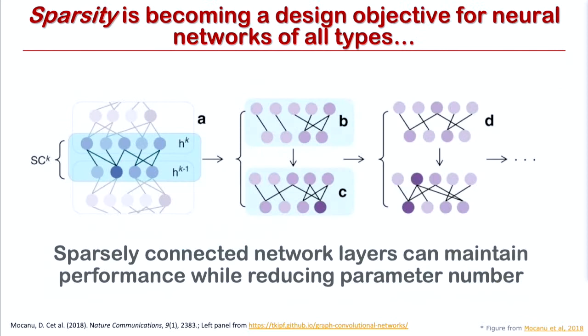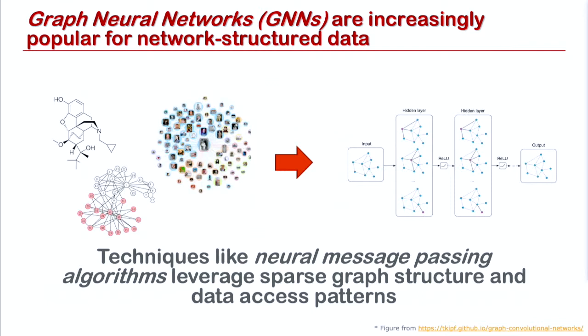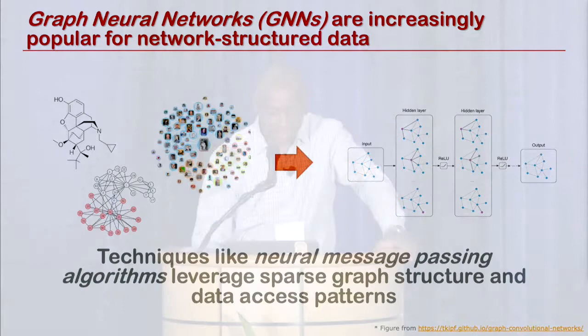Another implication is how neural networks are changing. Neural networks traditionally have been dense structures trained using dense matrix multiply operations, but more and more networks are becoming sparse, and people are thinking about training them fundamentally from a sparse starting point. This allows the number of parameters to grow without increasing quadratically. Another reason for sparsity is fundamentally modeling the world — where you want to model people, places, and things in their relationships, you have a sparse graph-like representation, which gives rise to graph neural networks as ways of building more accurate models.